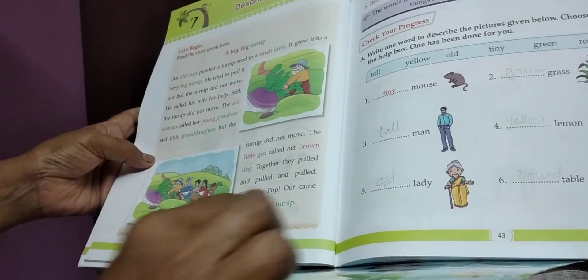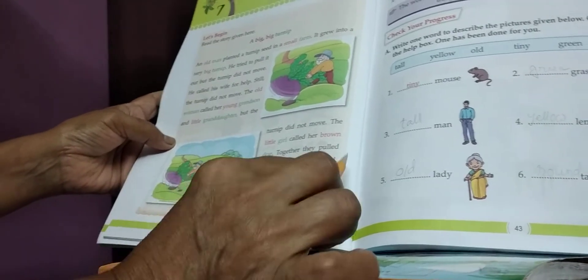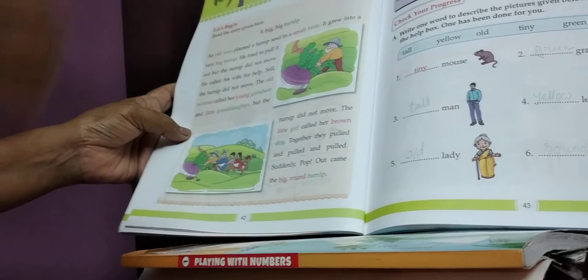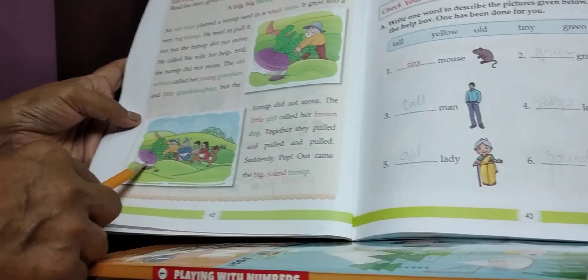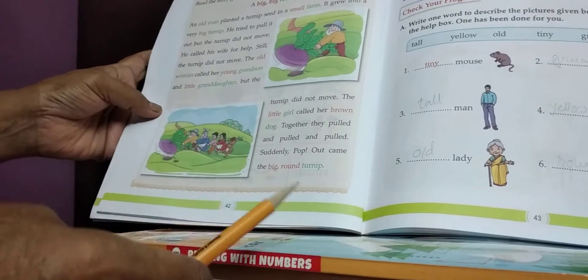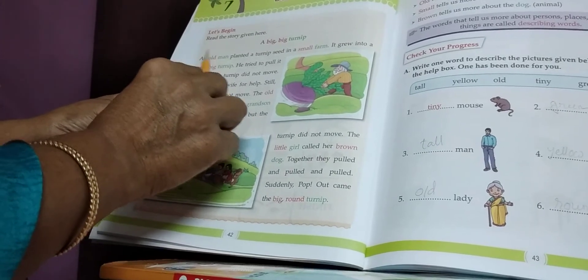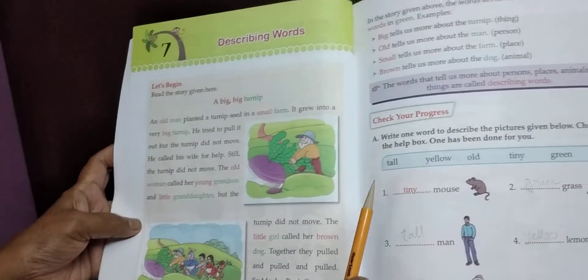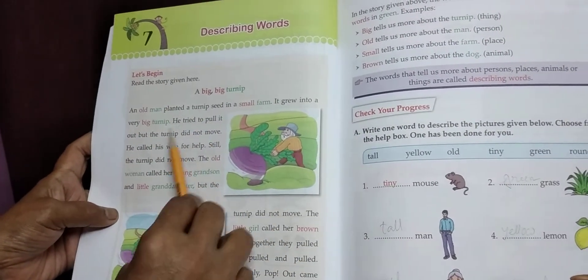Little girl called her brown dog. Together they pulled and pulled and pulled. They pulled so much but the turnip did not move. Suddenly pop, suddenly pop came out. Out came the big round turnip. What happened? They pulled the turnip out.